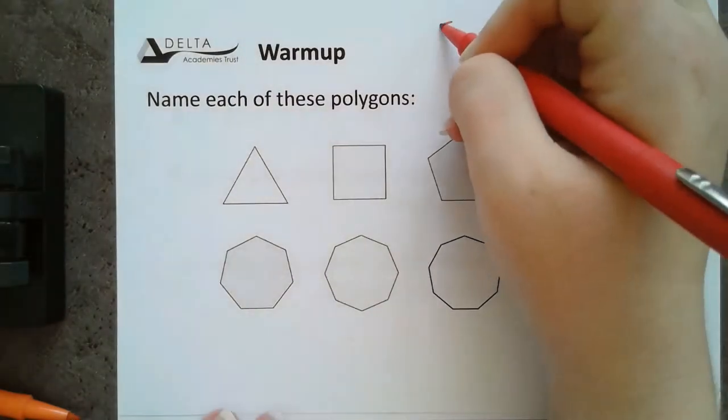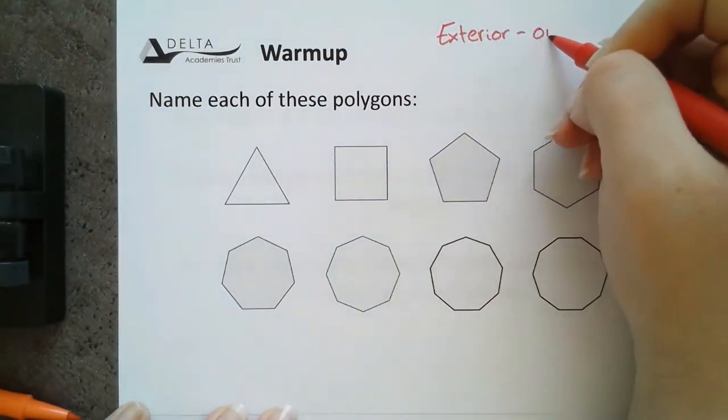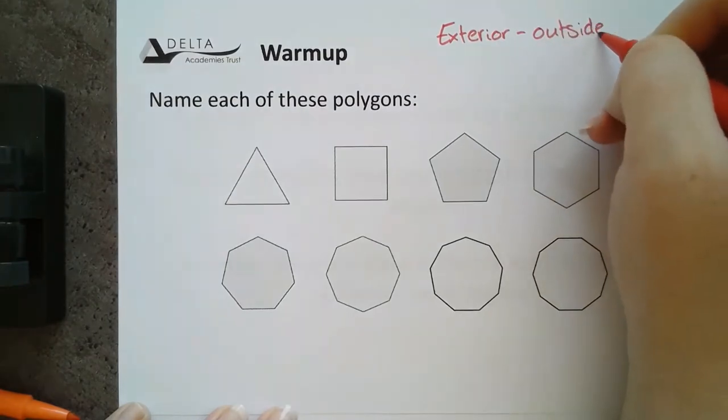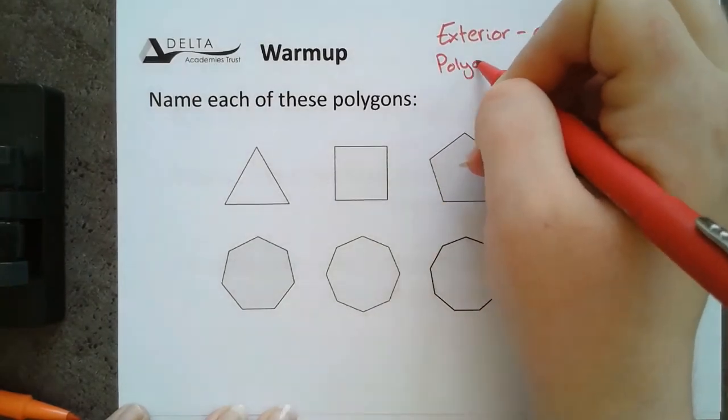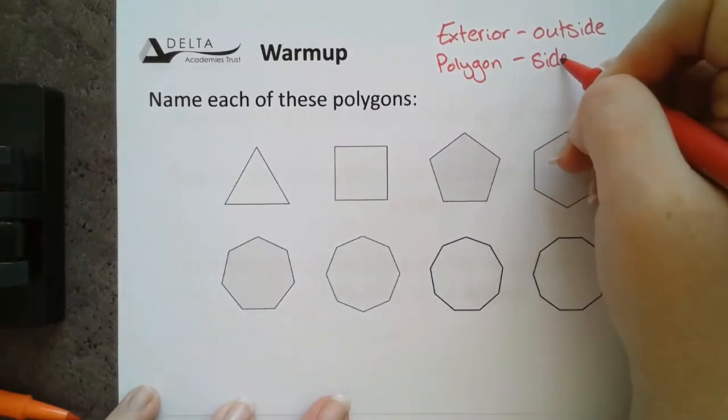There's two words there that are quite important. The first one is exterior, which means on the outside. And then the word polygon, which means a side with straight edges.